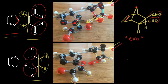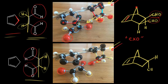Let's draw in this product. We have our bicyclic compound with our bridging CH2 and double bond in the back. Now the hydrogens are up. At this carbon there's a hydrogen up and an aldehyde going down — CHO going down. Same thing at this carbon: a hydrogen going up and an aldehyde going down. This is called the endo product. Our aldehydes are going down, our bridging CH2 is up, and here is our double bond.